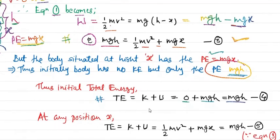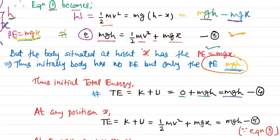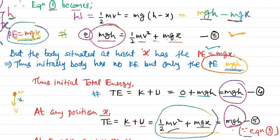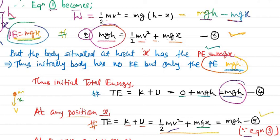At any intermediate position x, the total energy is again the sum of kinetic energy and potential energy: KE + PE = ½mv² + mgx. But recalling equation number 3, we found that ½mv² + mgx = mgh. So the total energy at any position x is also mgh. Name this equation number 5.